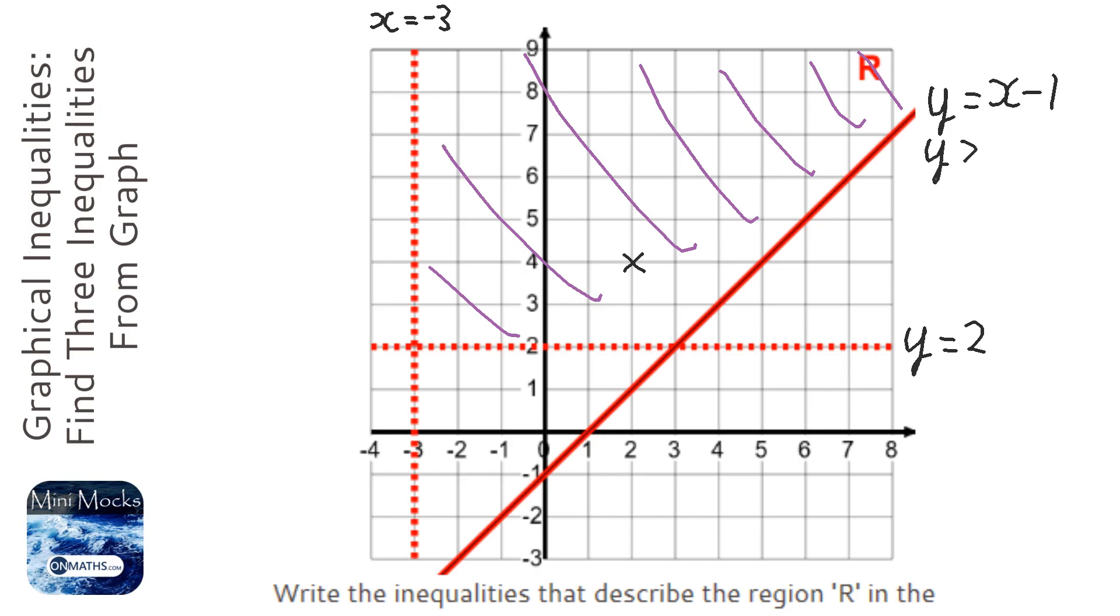So let's try y is greater than x minus 1 and see if it works. So the y coordinate is 4, the x coordinate is 2 for the little random coordinate we picked. So is 4 greater than, 2 take away 1 is 1. Is 4 greater than 1?